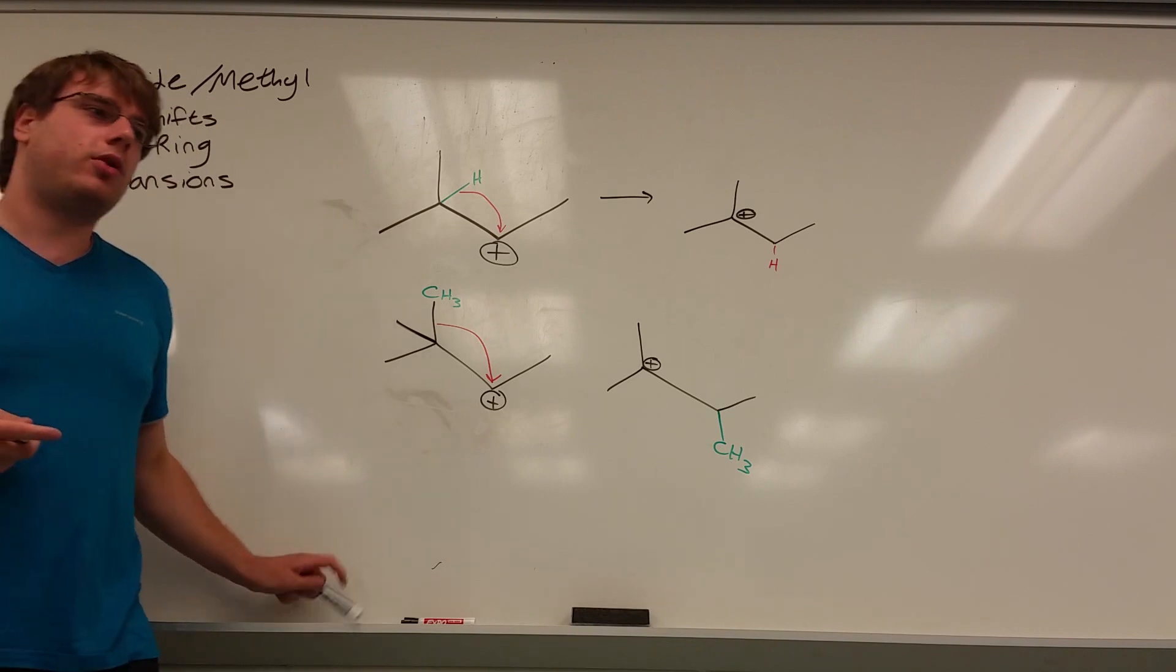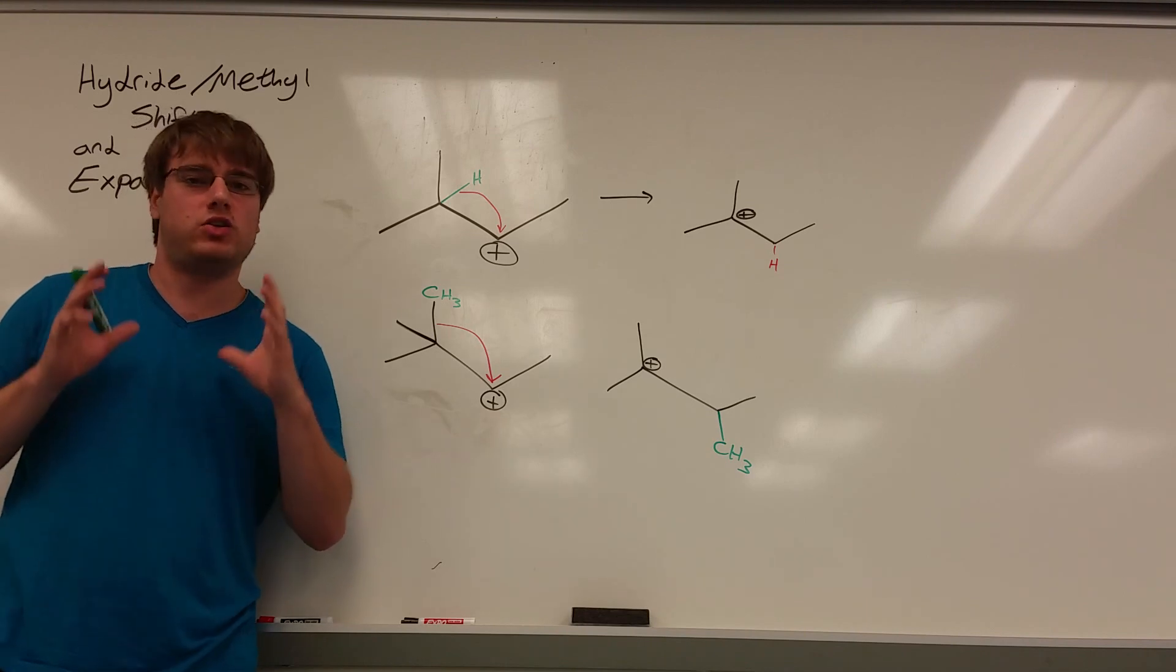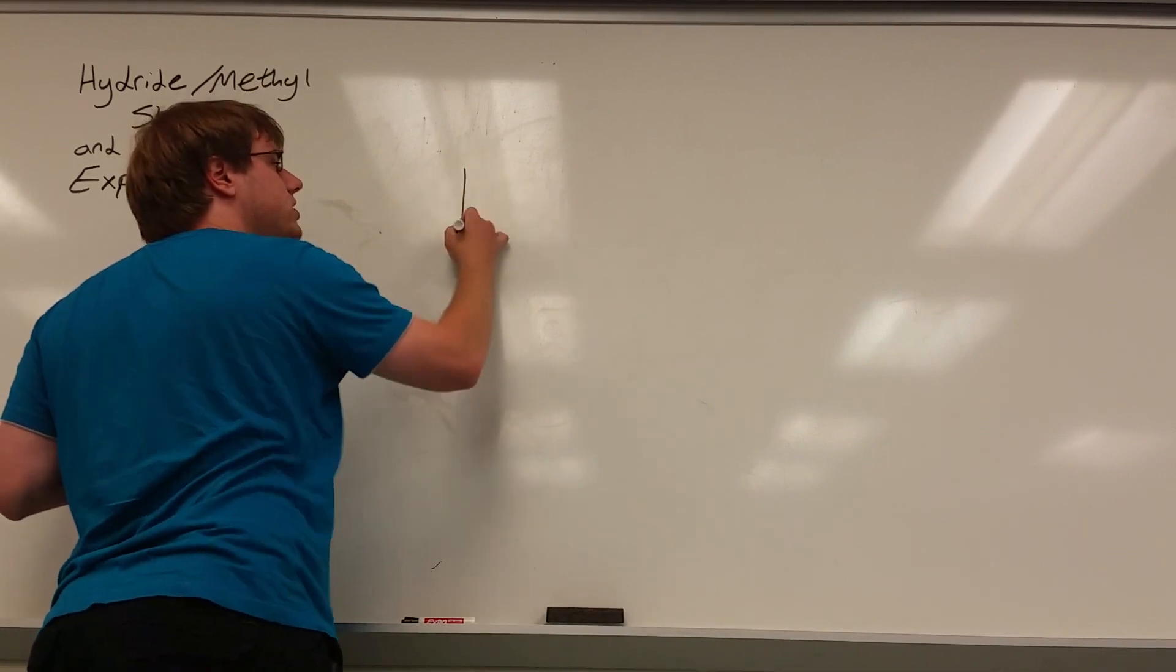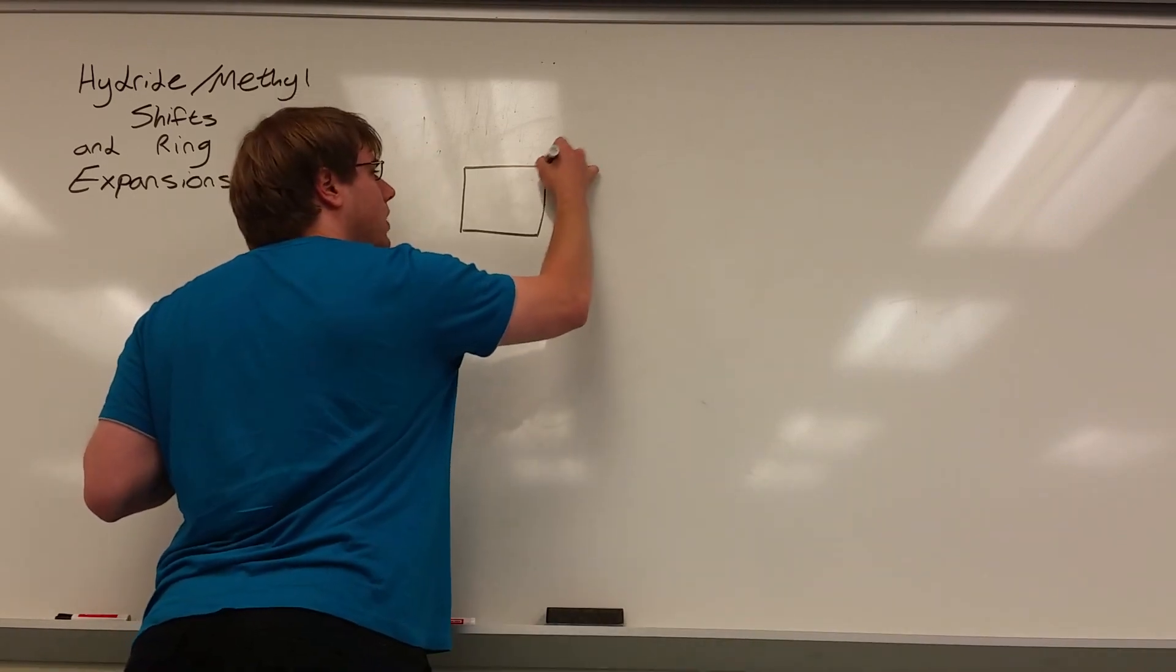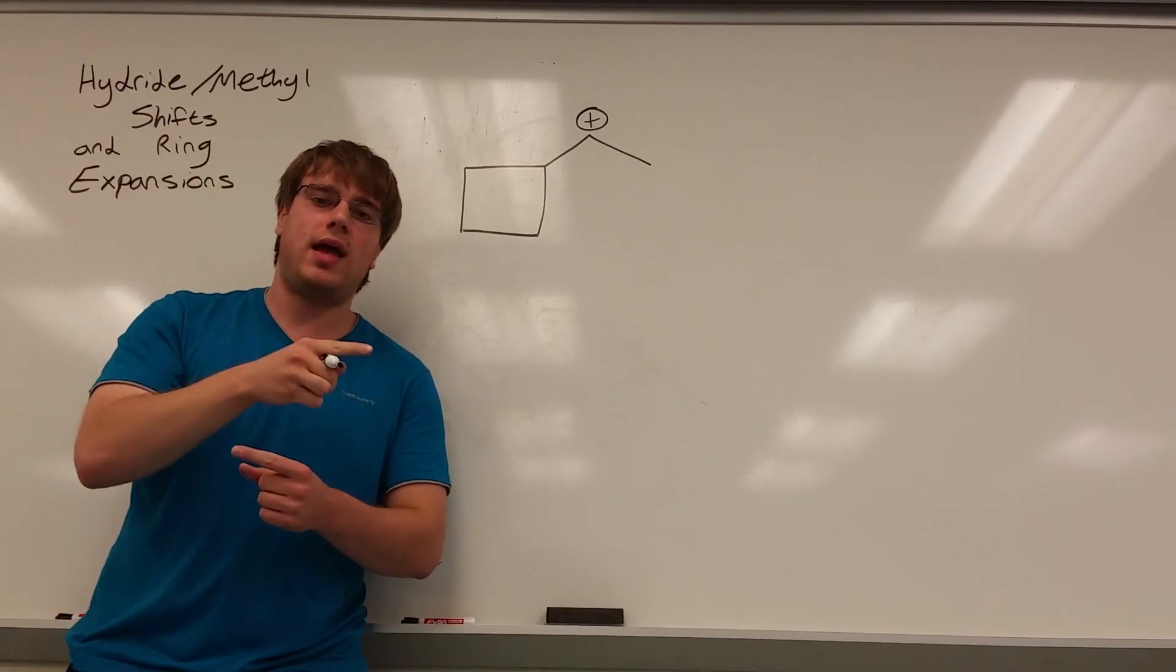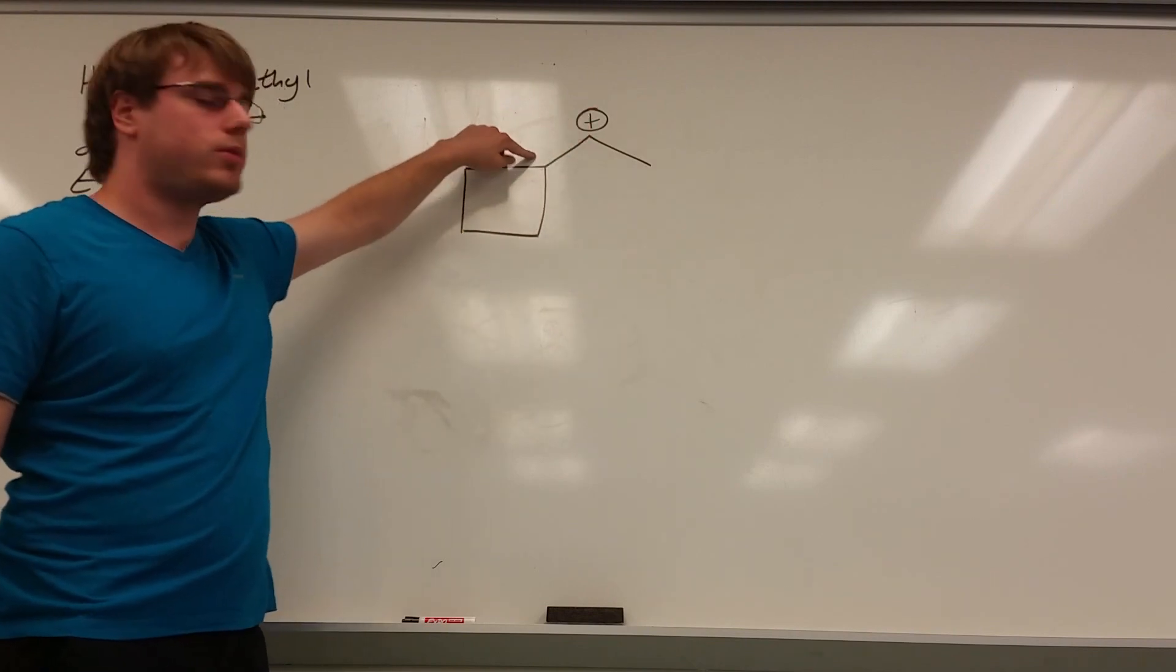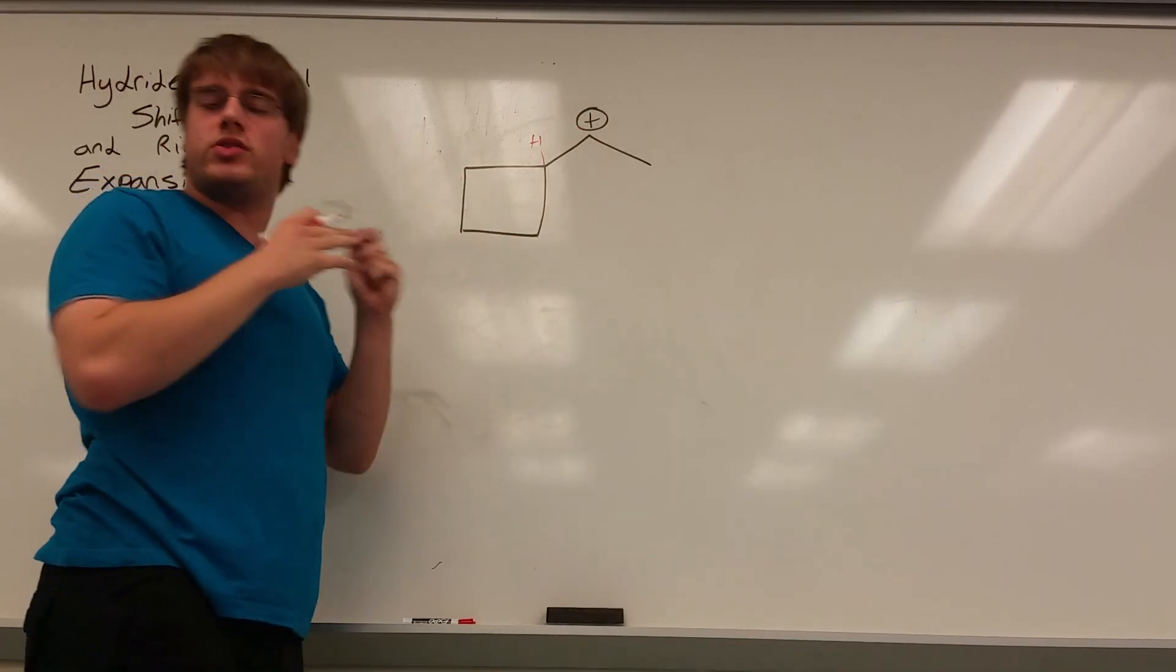The last type of carbocation shift that you have to be aware of is called the ring expansion, and these are the tricky ones but they're very obvious once you know what to look for. First of all, as the name implies, a ring expansion should involve a ring. Let's say I have a four-membered ring and it's a carbocation shift, so we know there should be a carbocation somewhere. The way you know you're going to do a ring expansion is you will see that carbocation a single bond away from your ring. Your first instinct might be to do a hydride shift, and if it wasn't a ring you'd be right, but ring expansions actually get priority.